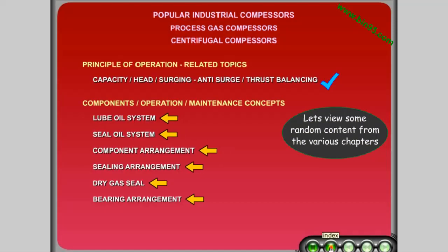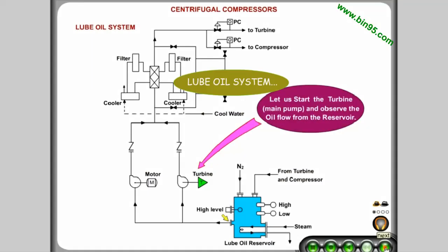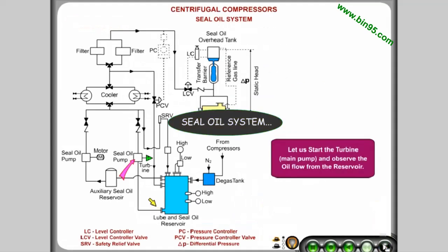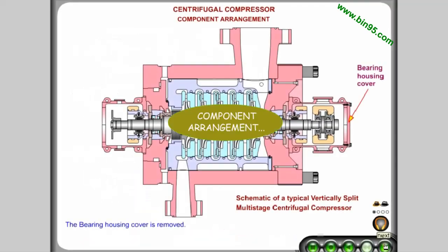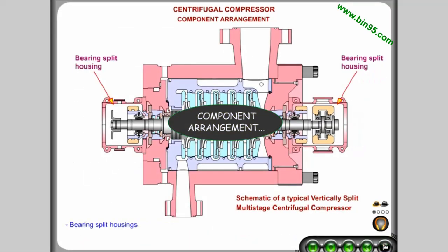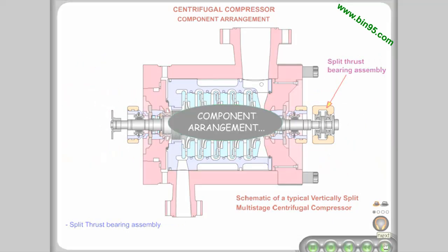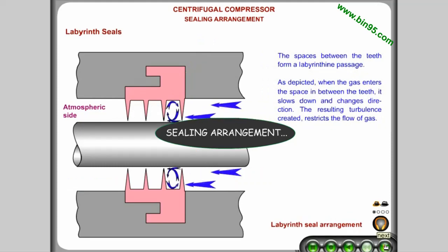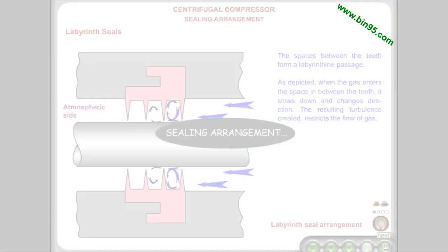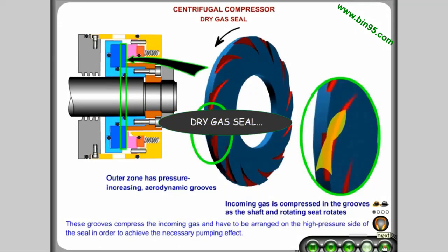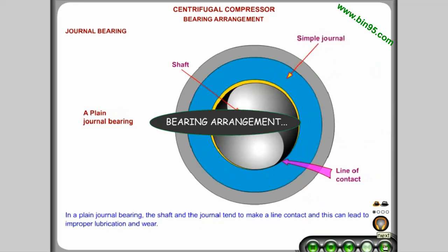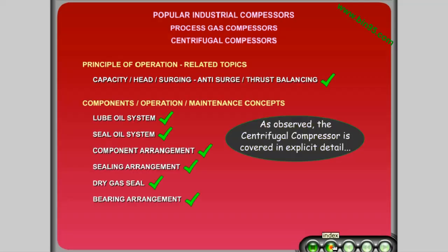Let's view some random content from the various chapters: lube oil system, seal oil system, component arrangement, sealing arrangement, dry gas seal, and bearing arrangement. As observed, the centrifugal compressor is covered in explicit detail.